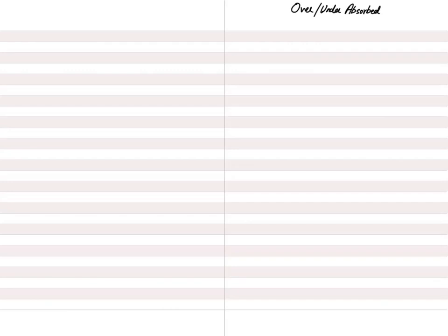Whenever we absorb overhead based on this estimated rate, the overhead charged is sometimes more than it should be — this is called overabsorption — and sometimes less than it should be, which is called underabsorption. We need to calculate how much overhead has been overabsorbed or underabsorbed using a formula.